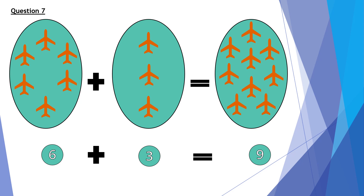Question 7. 6 aeroplanes plus 3 aeroplanes equals 9 aeroplanes. So in the number form, 6 plus 3 equals 9.